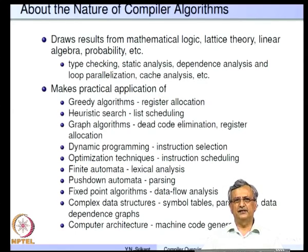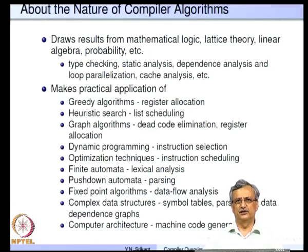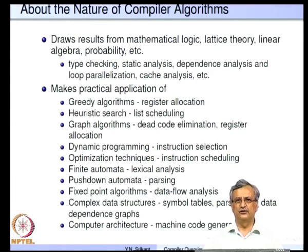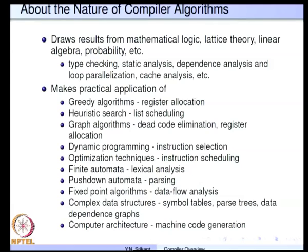There are practical applications of many algorithms — for example, greedy algorithms are used in register allocation; heuristic search is used in list scheduling, which is part of a code generator; graph algorithms are used in dead code elimination and register allocation; dynamic programming is used in instruction selection; optimization techniques are used in instruction scheduling; finite automata play a part in lexical analysis; pushdown automata are helpful for parsing; fixed-point algorithms are used for data flow analysis. Very complex data structures such as symbol tables, parse trees, and data dependence graphs are built using trees, balanced trees, and graphs. Knowledge of computer architecture is used in machine code generation.